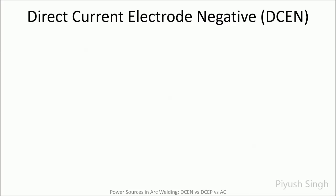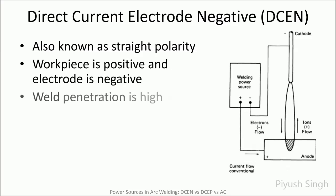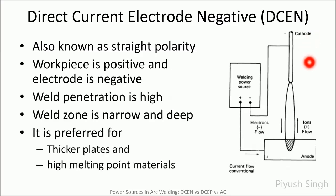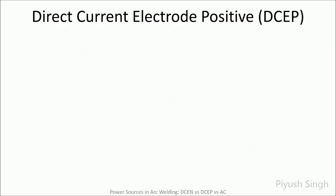Direct current electrode negative, DCEN, is when the electrode is negative and becomes the cathode, and the workpiece base becomes the anode, that is a positive electrode. It is also known as straight polarity. In this case, the electrons flow from the electrode towards the weld pool and positive ions move across the arc towards the electrode. Most of the heat is generated at the anode, and hence this polarity results in deep and narrow welds. It is the preferred choice for thicker materials.